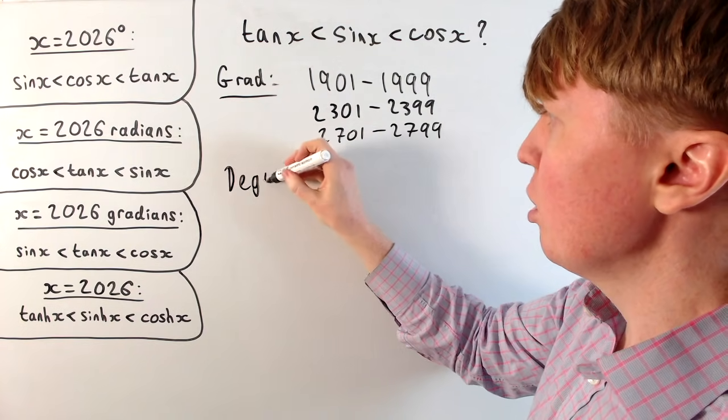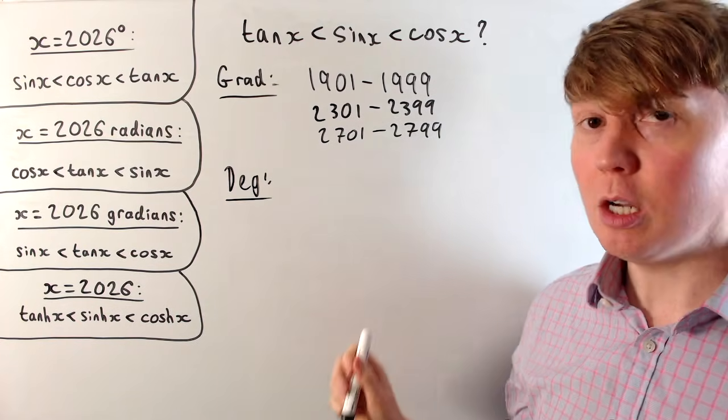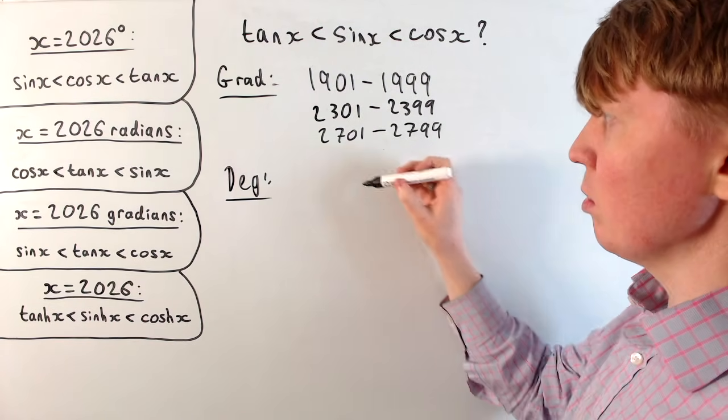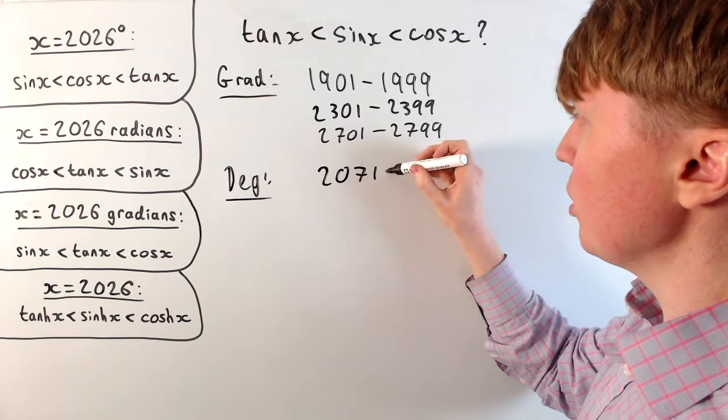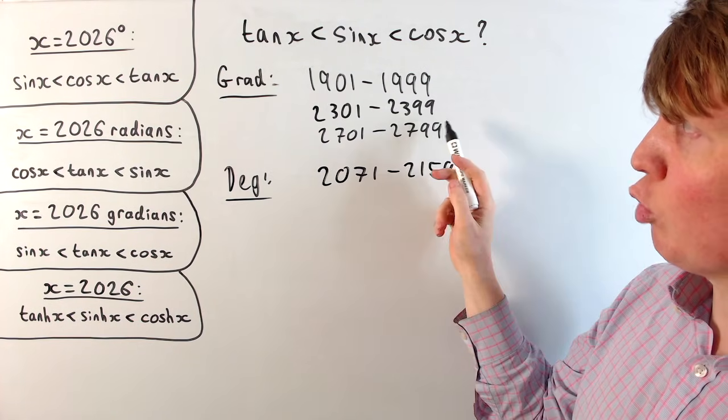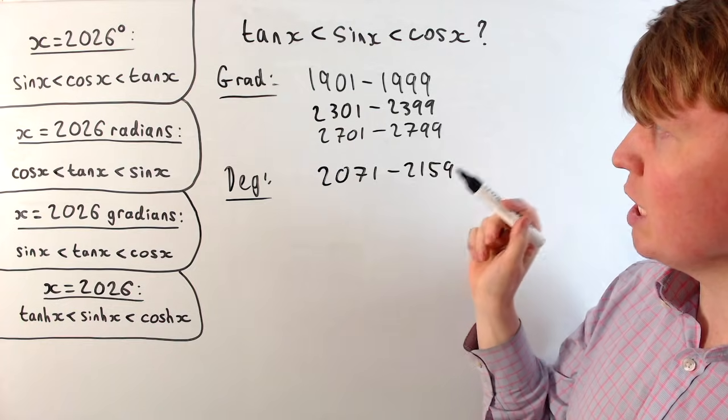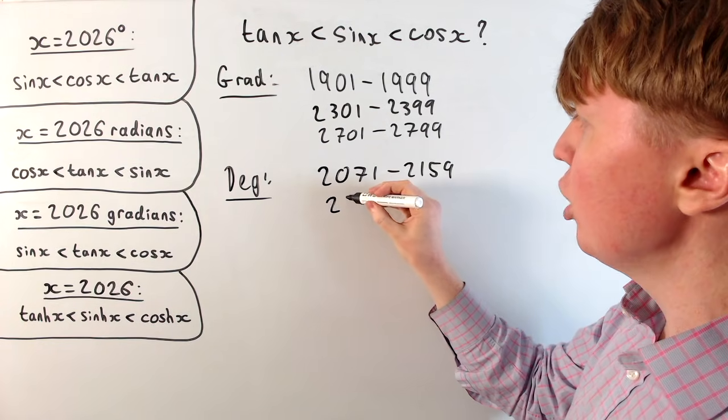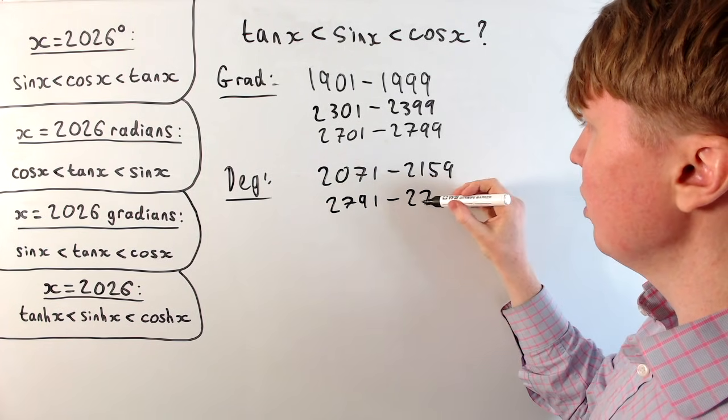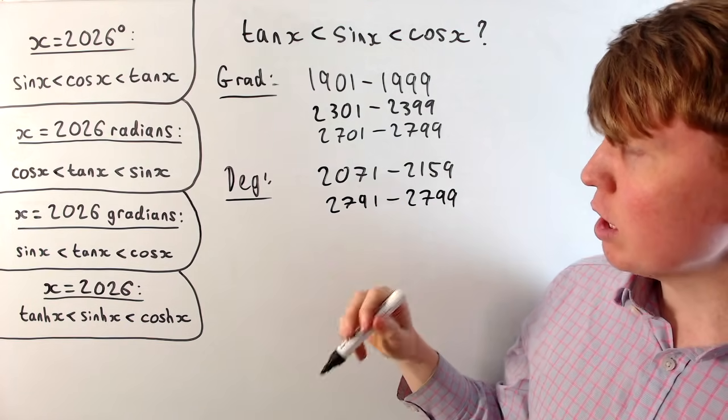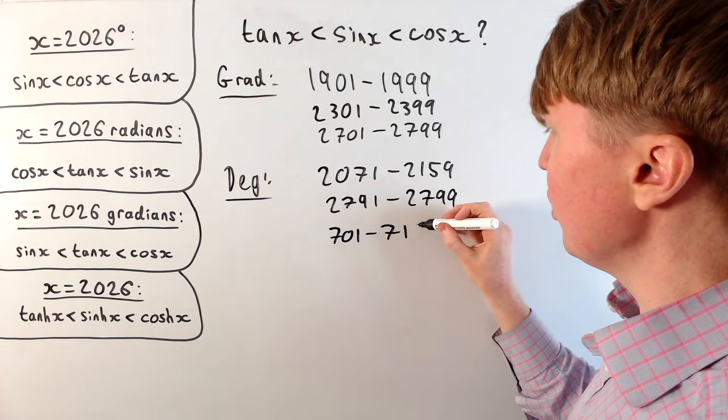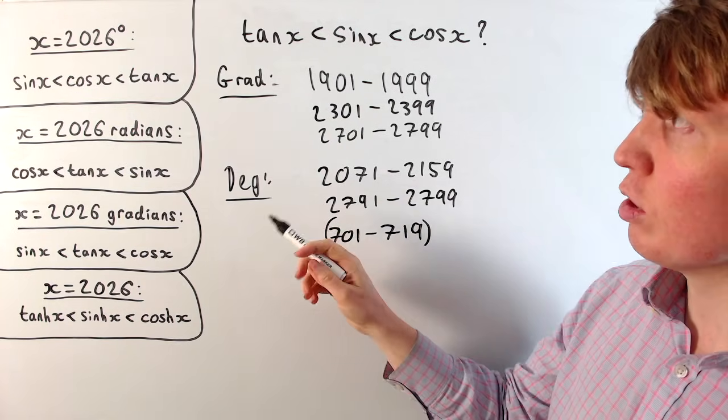Then in degrees, this is going to be the next order coming up. So we'll get this from 2071 all the way up to 2159. But then if we want all of these to be satisfied, we need to look further to the future for gradians. There's no overlap in the 2300s. But then in the 2700s, we get this order is satisfied in degrees from 2791 all the way up to 2799. And just for interest, this order was last achieved in degrees all the way back from 701 to 719.